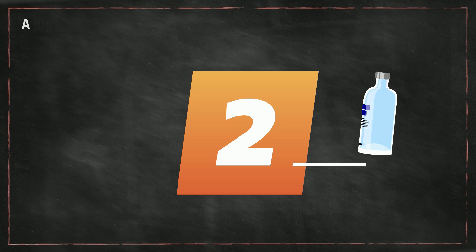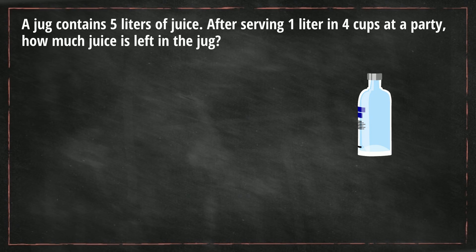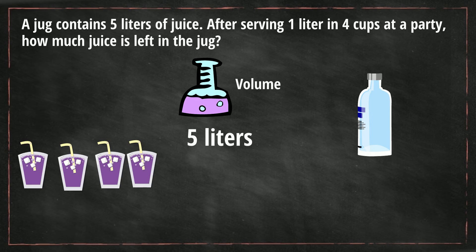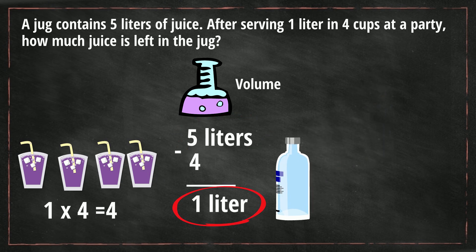A jug contains five liters of juice. After serving one liter in four cups at a party, how much juice is left in the jug? First, what are we measuring? 'Liters' tells us that we're measuring volume. We began with five liters, but we served four cups with one liter each. So four times one is four. We take our original amount, five liters, and subtract four, and that gives us one liter left in the jug.